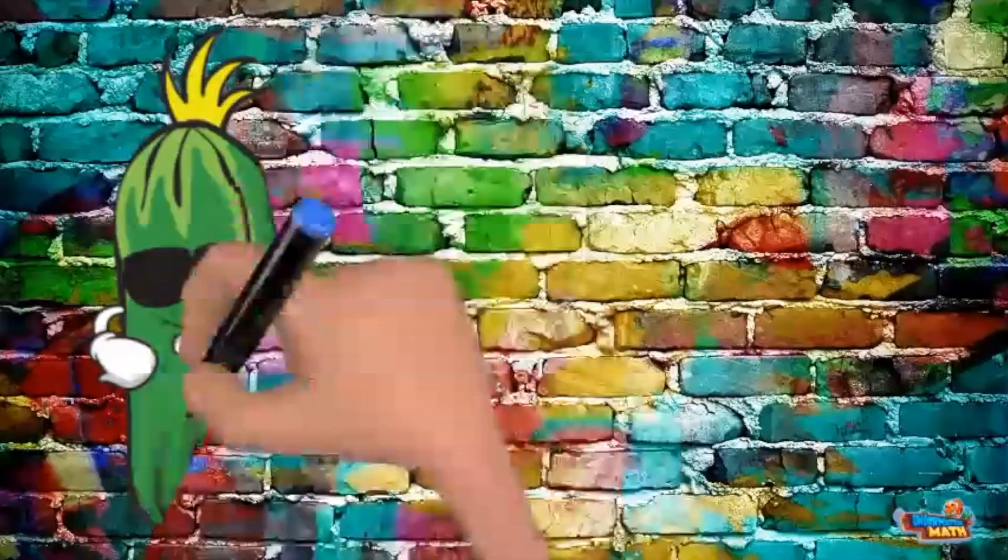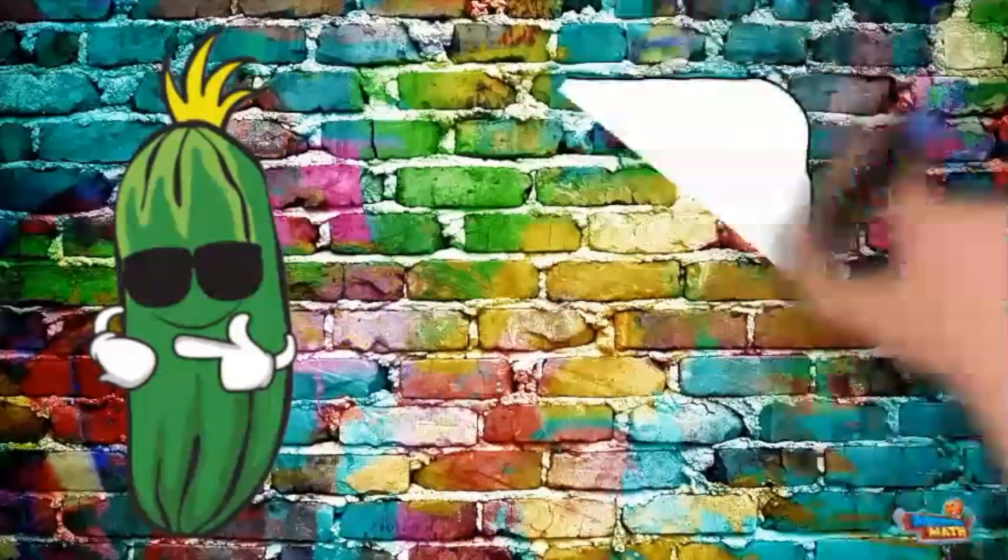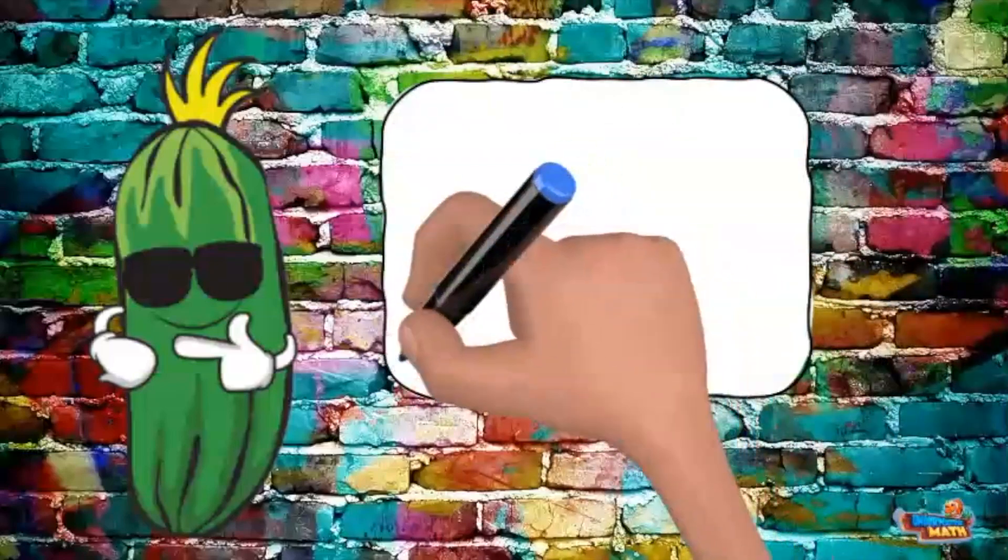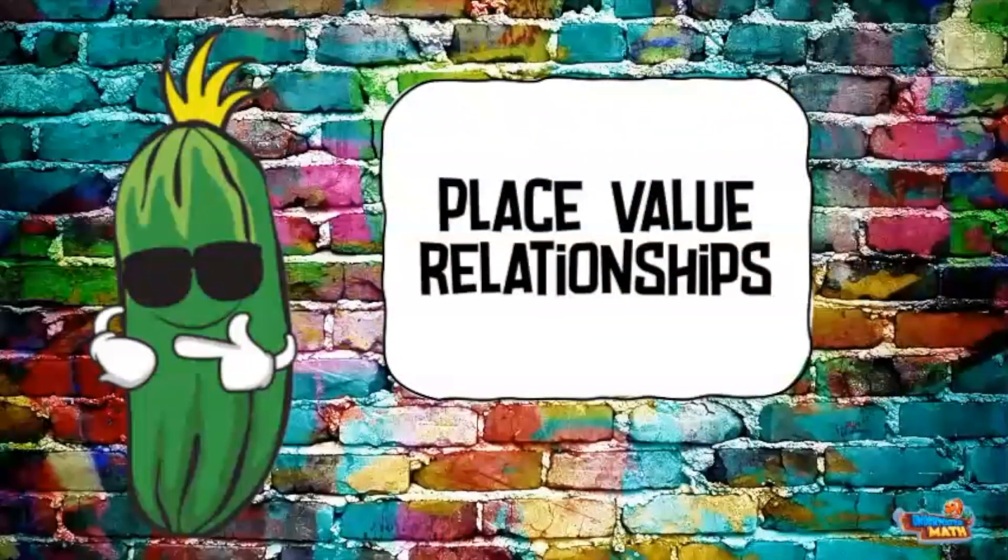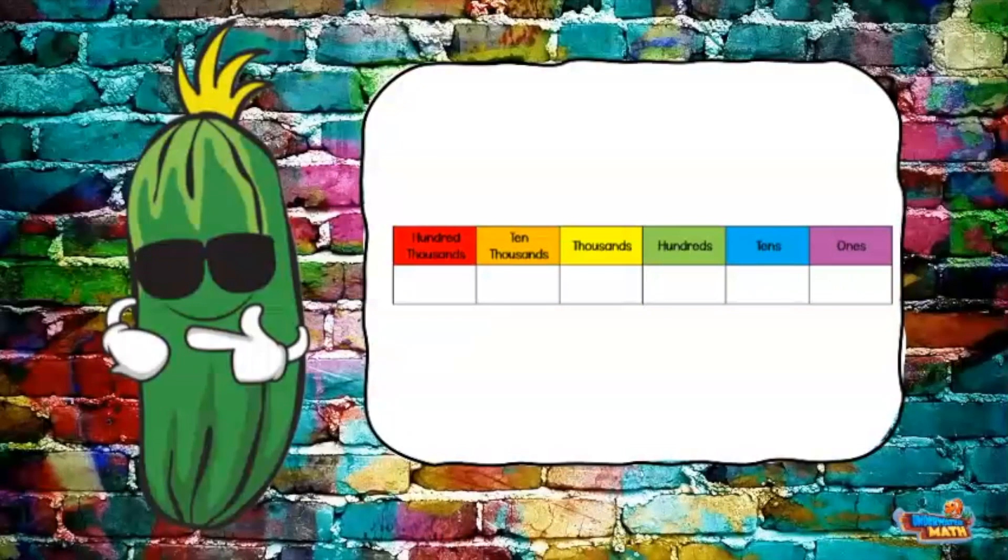Hey all you cool cats, Mr. Dill is here to talk to you all about place value relationships. Place value is used to show the value of digits. This place value chart will help illustrate how these values relate to one another.